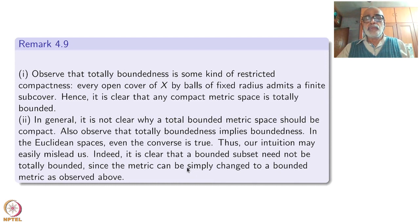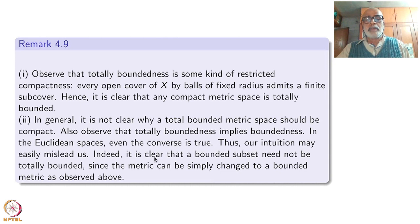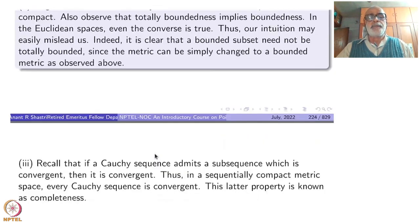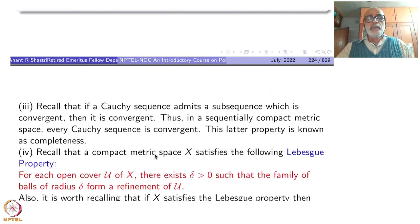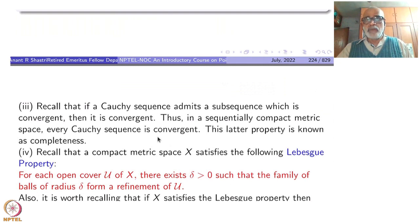Indeed it is clear that a bounded subset need not be totally bounded, since the metric can simply be changed to a bounded metric. We will see examples — unless you see an example you will not be satisfied. Recall that if a Cauchy sequence admits a subsequence which is convergent, then the sequence itself is convergent.